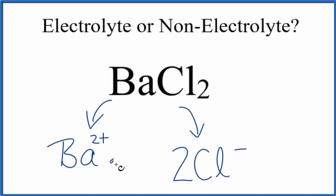We should add (aq) after the barium ion and the 2 chloride ions to show that they're dissolved in water. Since these are dissolved in water and they're charged, the solution will conduct electricity. BaCl₂ is an electrolyte. In fact, since this dissociates completely in water, we'd consider barium chloride to be a strong electrolyte.